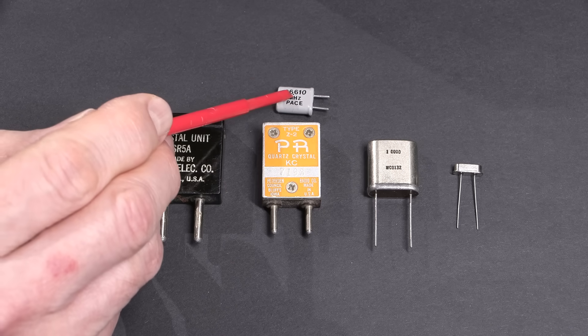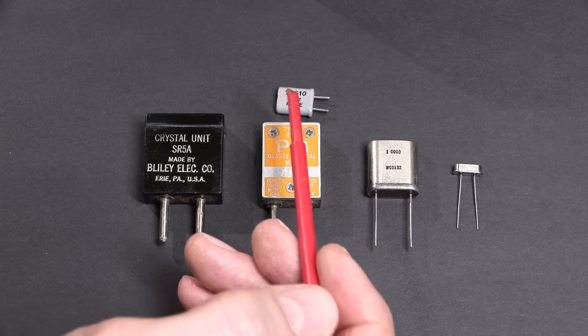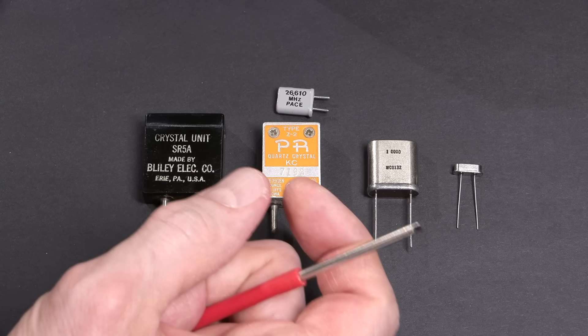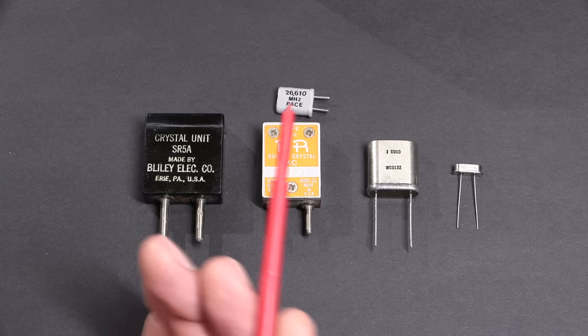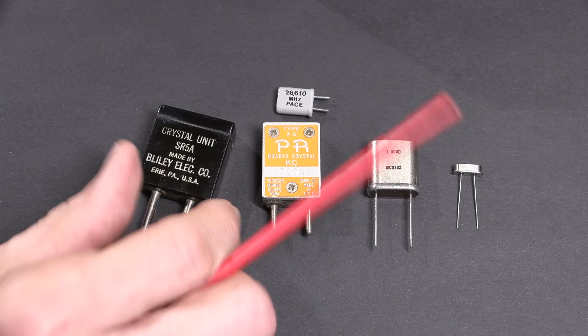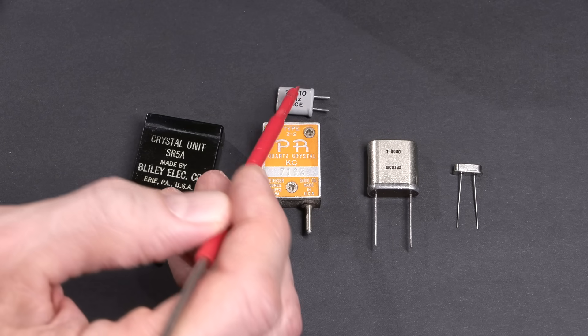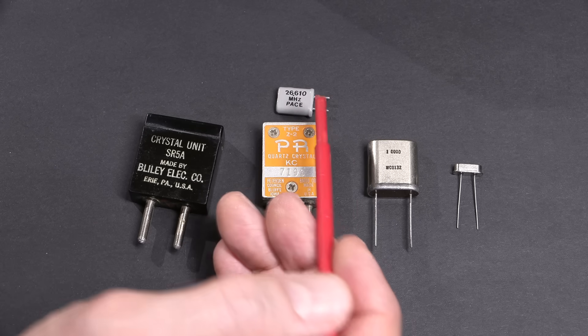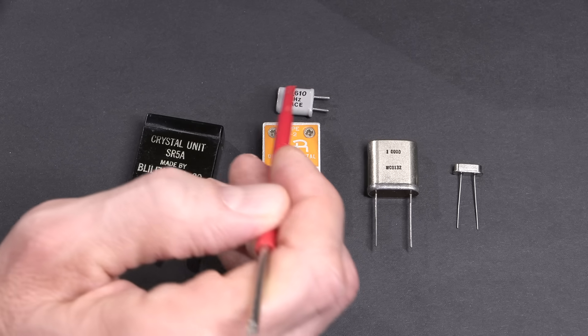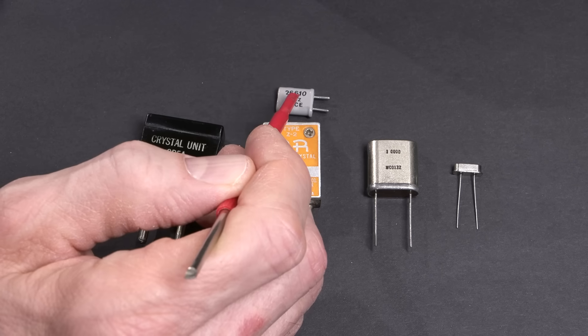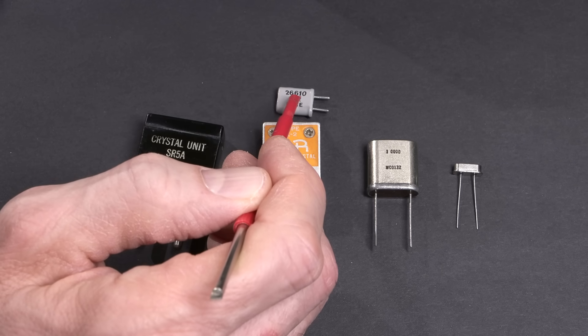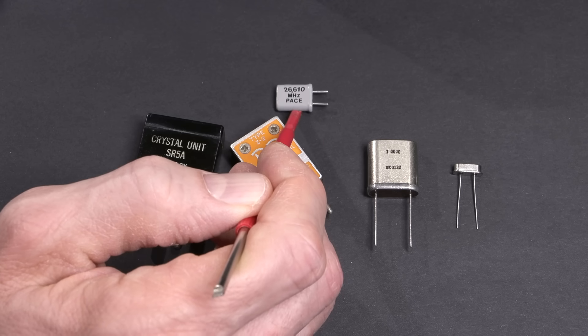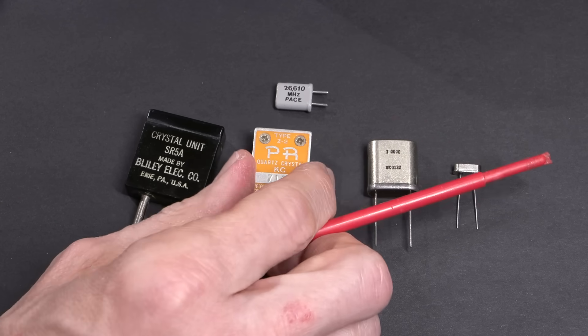This one here is an overtone type crystal. Once crystals get beyond 20 or 30 megahertz, milling the crystal down gets pretty thin, and that creates possibly an unreliable crystal. So what they do is they make the crystal work at a third, maybe three, five, or seven type overtone - basically a harmonic.